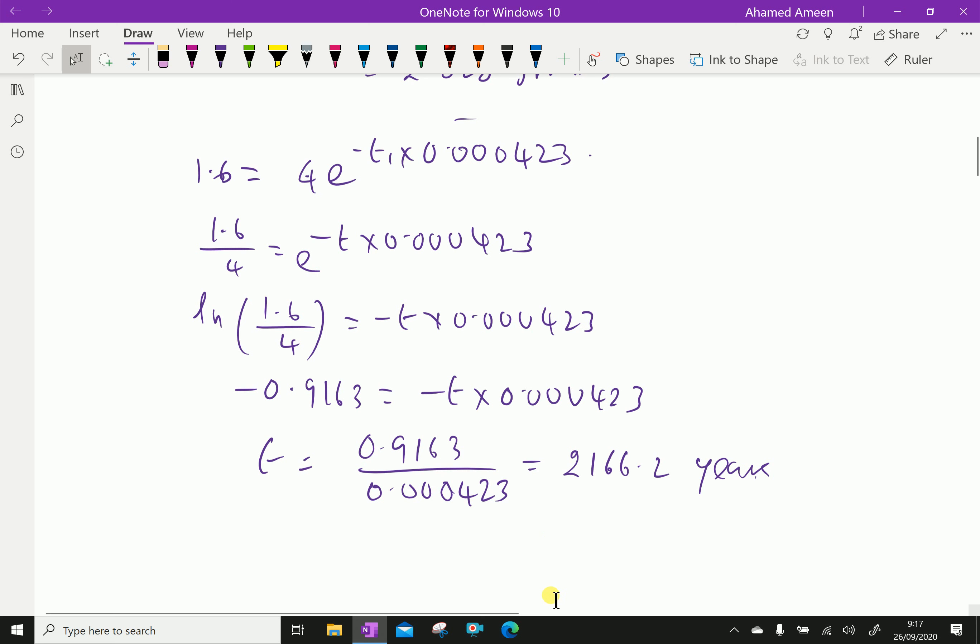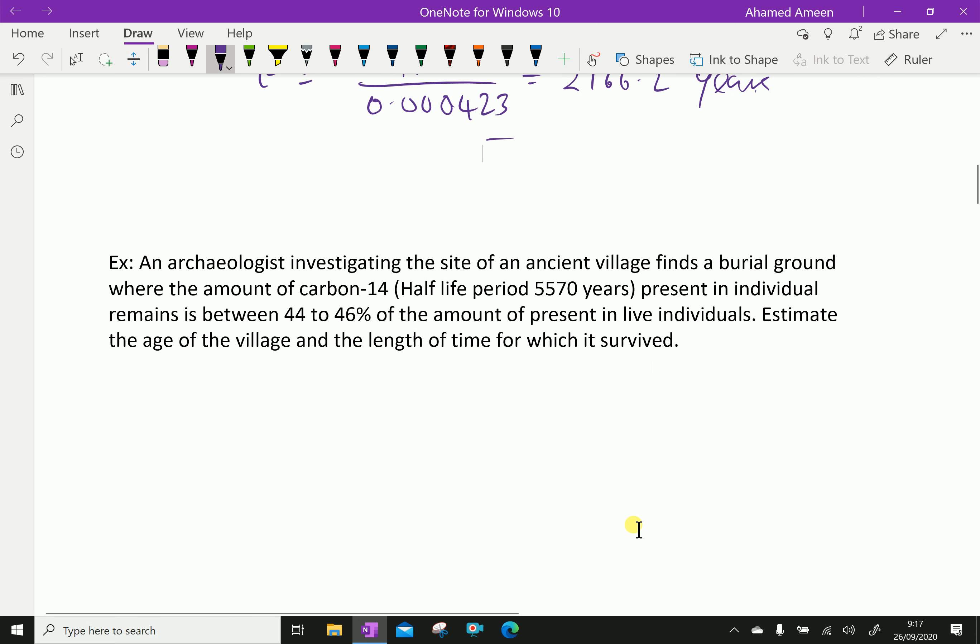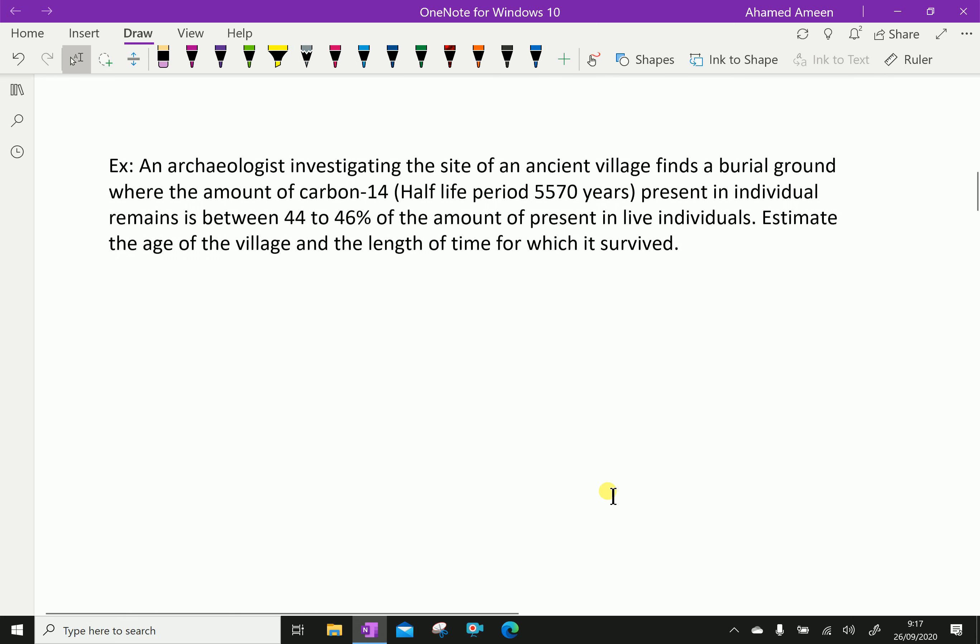After 2166.2 years, that substance becomes 1.6 grams. Next question: An archaeologist investigating the site of an ancient village finds a burial ground where the amount of carbon-14, half-life period 5570 years, present in individual remains is between 44 to 46 percent of the amount present in live individuals. Estimate the age of the village and the length of time for which it survived.